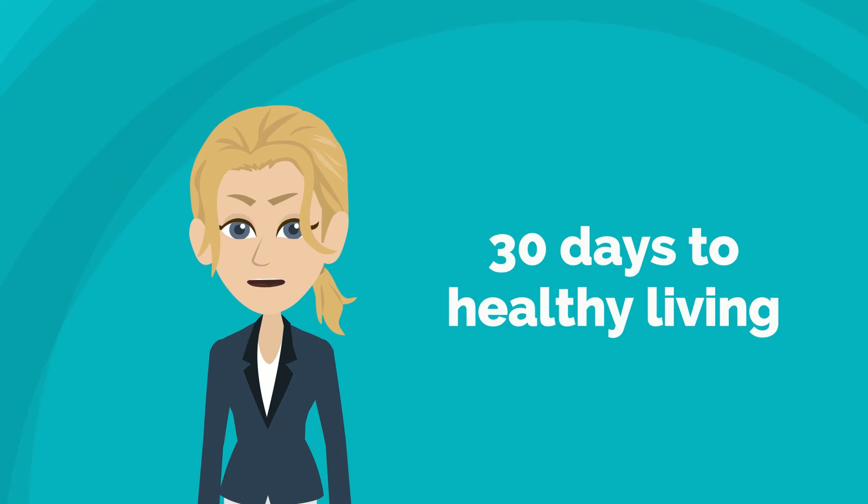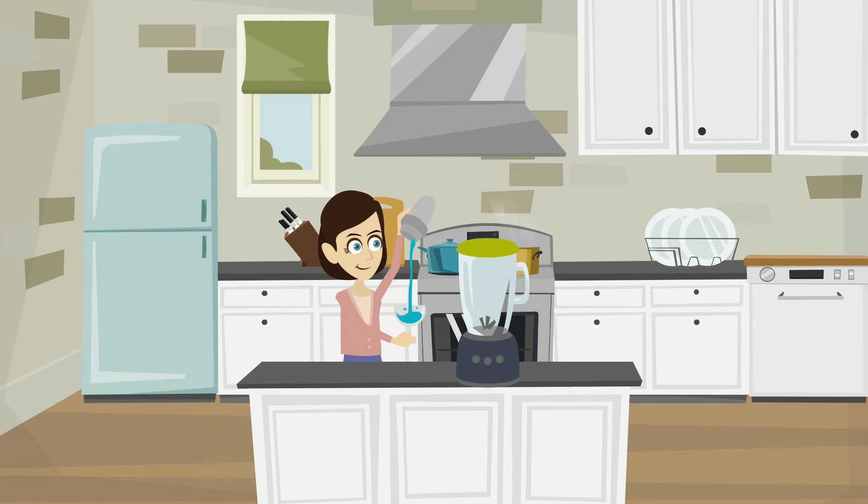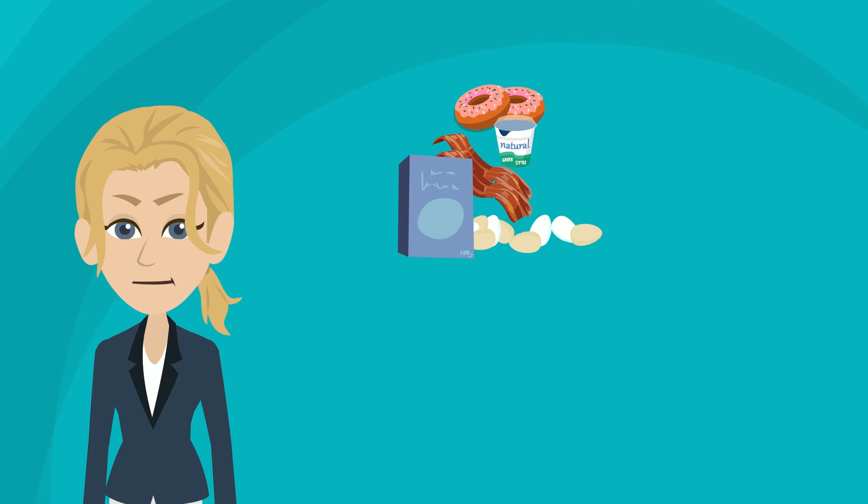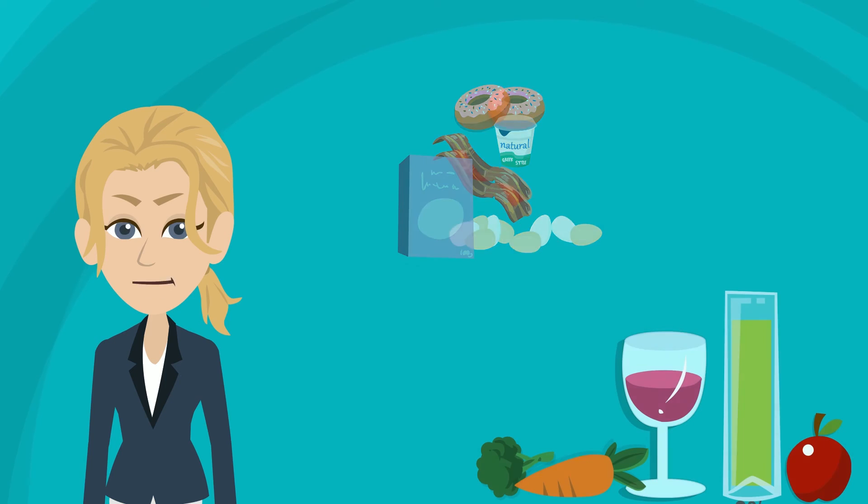This is called 30 Days to Healthy Living. Some of you may decide to change one or two habits into healthier ones, such as replacing a bagel for breakfast or a skipped breakfast with a smoothie. Others may try some of the recipes available in this program and begin to change some of their meal choices.